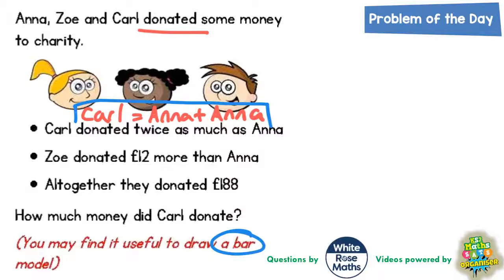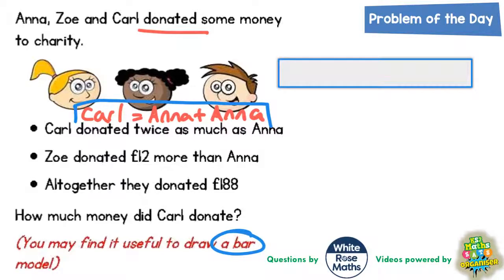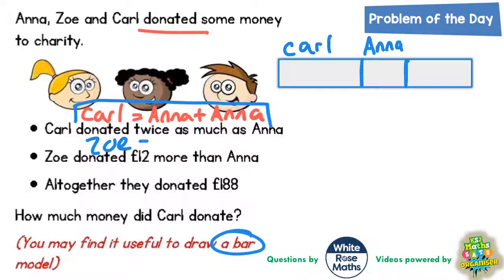In our bar we can start by drawing Carl's part. Let's say this section is represented by Carl. But Carl is twice as much as Anna's, so Anna's should be half the size of Carl's bit — this bit would be Anna. Then Zoe is £12 more than Anna, so Zoe did Anna's amount plus an extra £12.